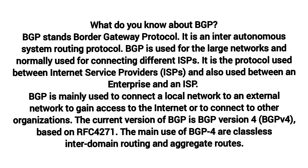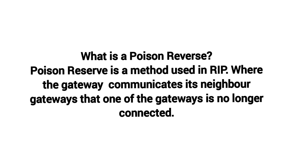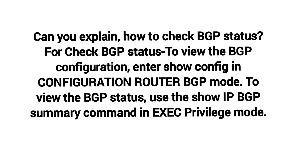What is poison reverse? Poison reverse is a method used in RIP where the gateway communicates to its neighbor gateways that one of the gateways is no longer connected.